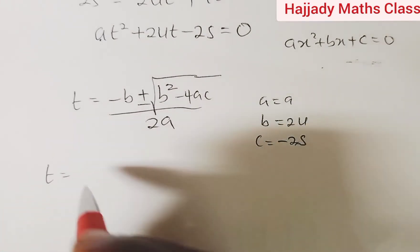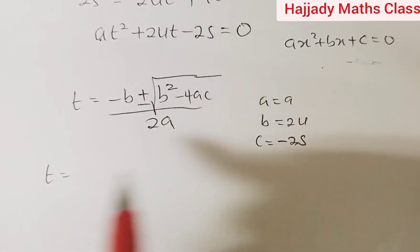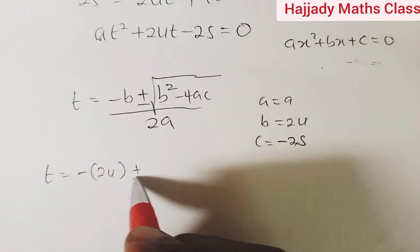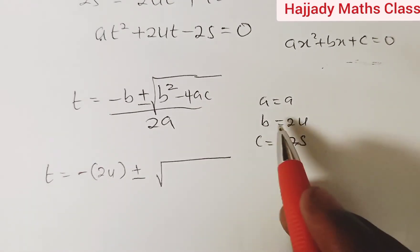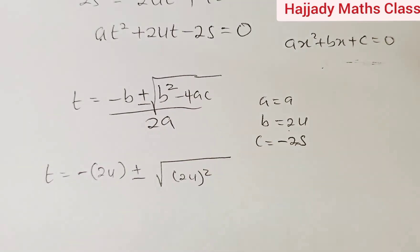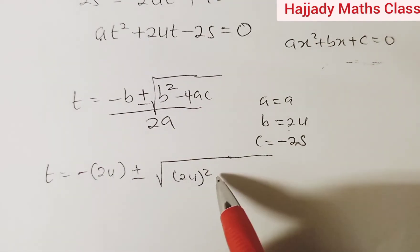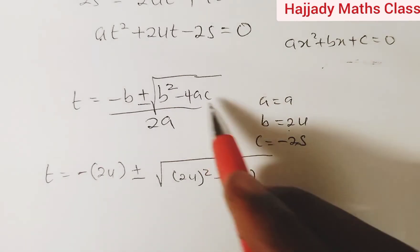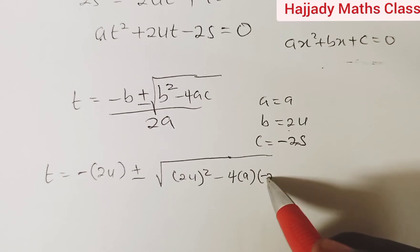So t equals minus b, which is minus 2u, plus or minus square root of b squared, which is 2u squared, minus 4ac, which is 4, a remains as a, and our c, which is minus 2s.